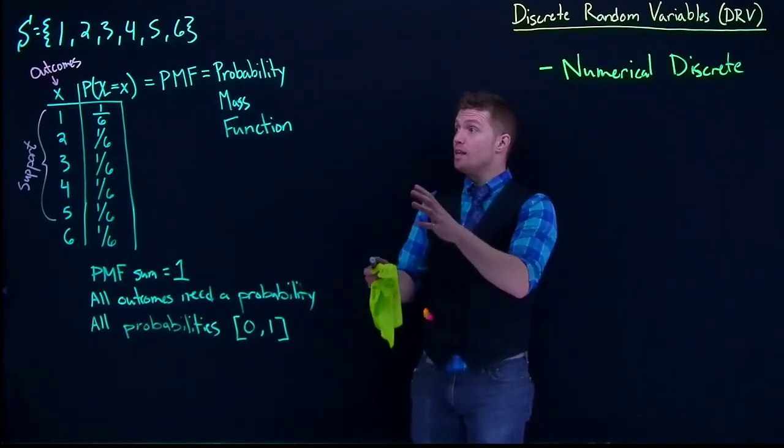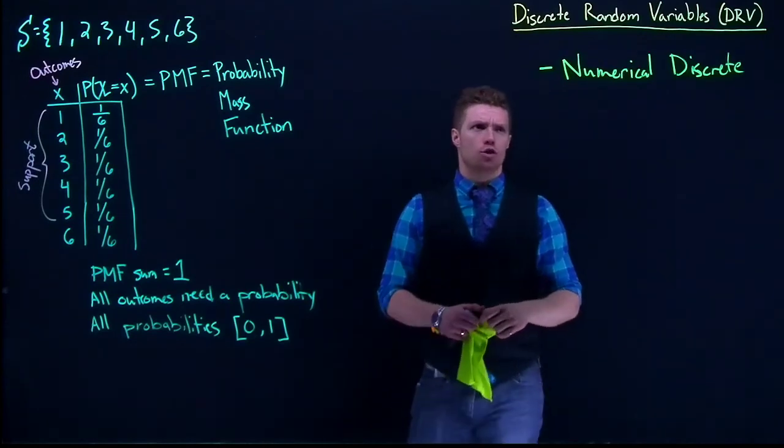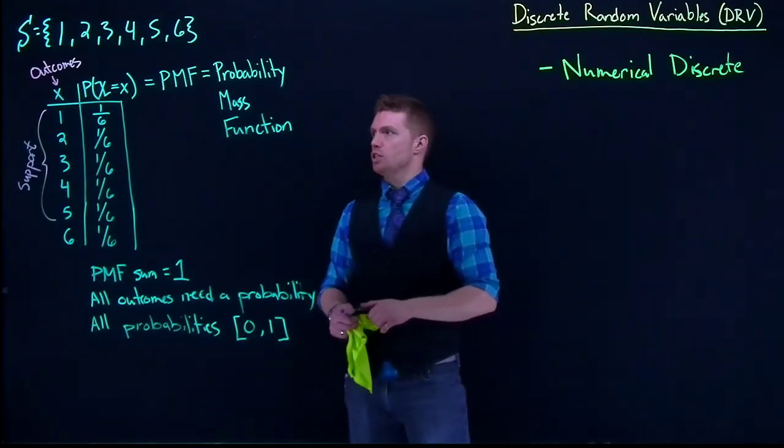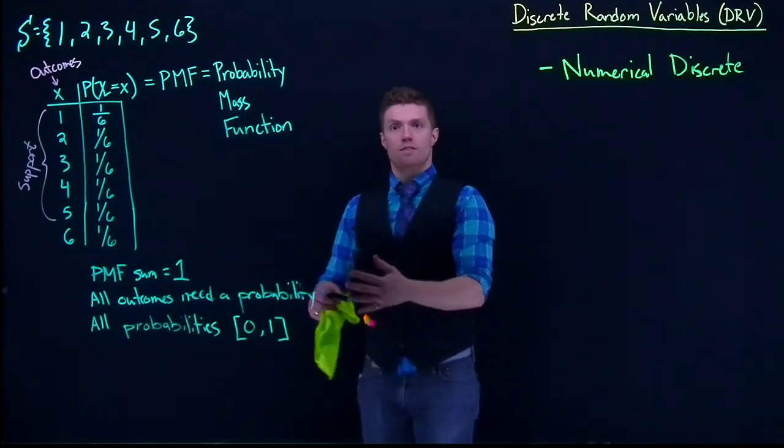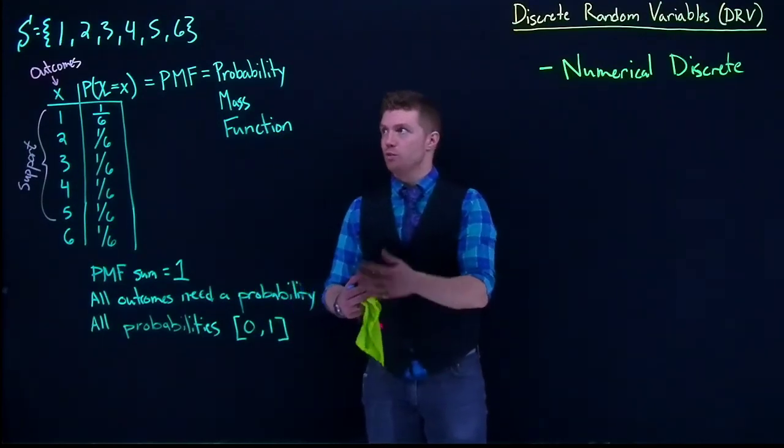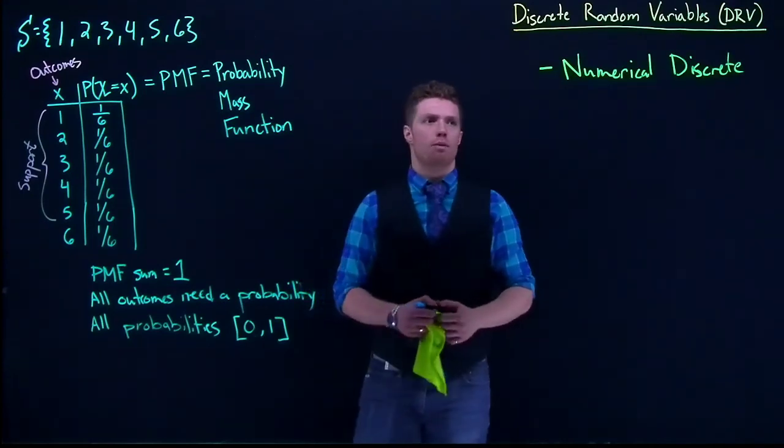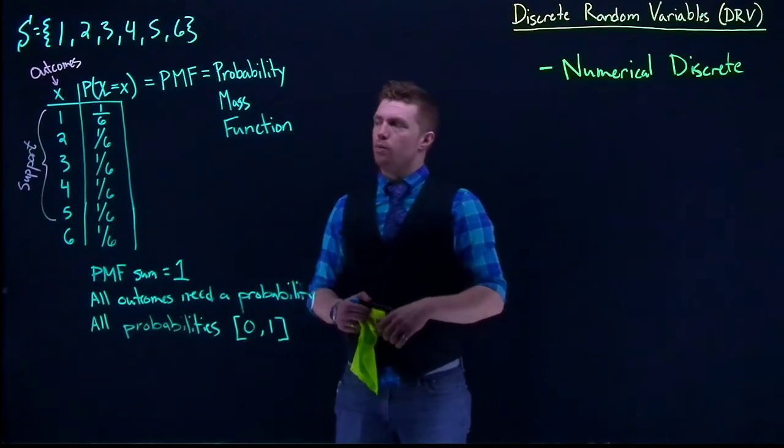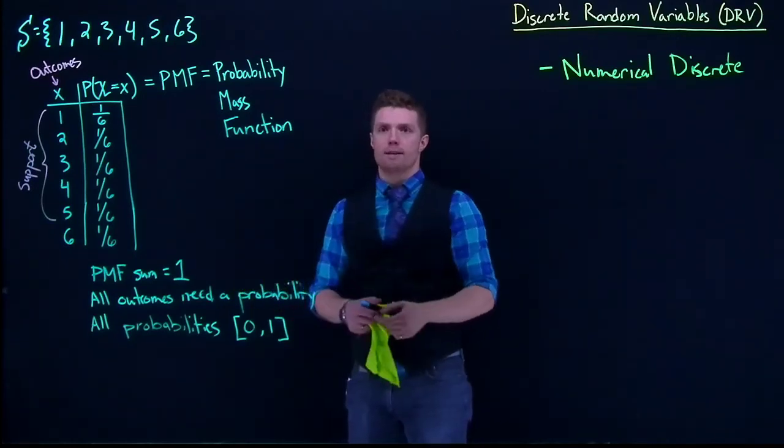That's just a really basic general idea of how these discrete random variables actually work and how we can set them up. If we look at all of this, this is actually really familiar. These rules are basically the same as the rules we've been using with our probability statements, and we just have a new way of organizing our data.